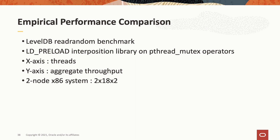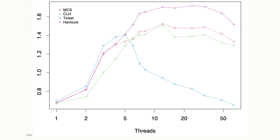We'll now show some performance results. We used the LevelDB Read Random Benchmark, which tests the scalability of random reads against a database. All our locks were implemented in an LD_PRELOAD interposition library, allowing us to change lock implementations without changing the application. The application uses the standard POSIX pthread mutex API. On the x-axis we have the number of threads, and on the y-axis is aggregate throughput. We used a two-node x86 system with 18 cores per node and two logical CPUs per core, for a total of 72 logical CPUs. Hemlock does relatively well compared to CLH and MCS. This graph also includes data on a classic ticket lock implementation. Ticket locks perform well at low levels of contention but fail to scale under higher load because they do not provide local spinning.